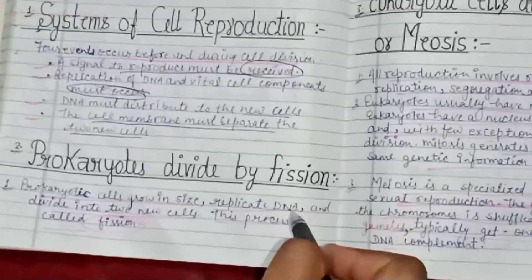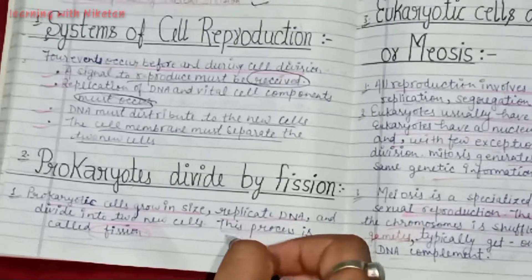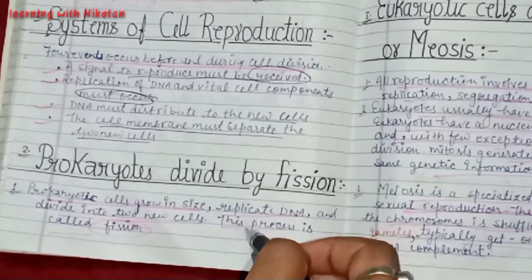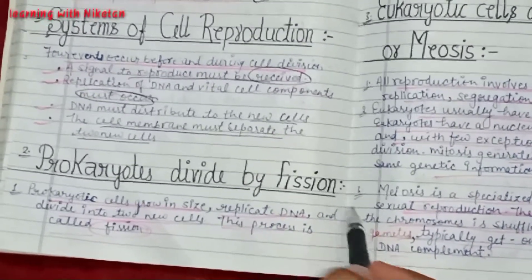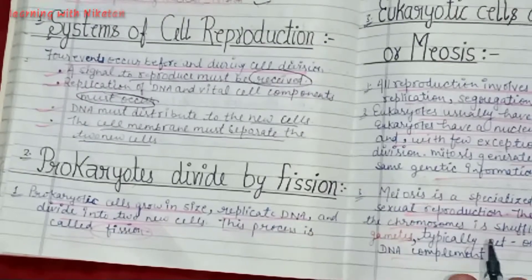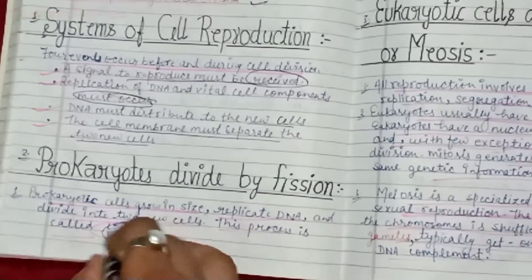Second one is prokaryotes divide by fission. The prokaryotic cells grow in size, replicate DNA, and divide into two new cells. This process is called fission.